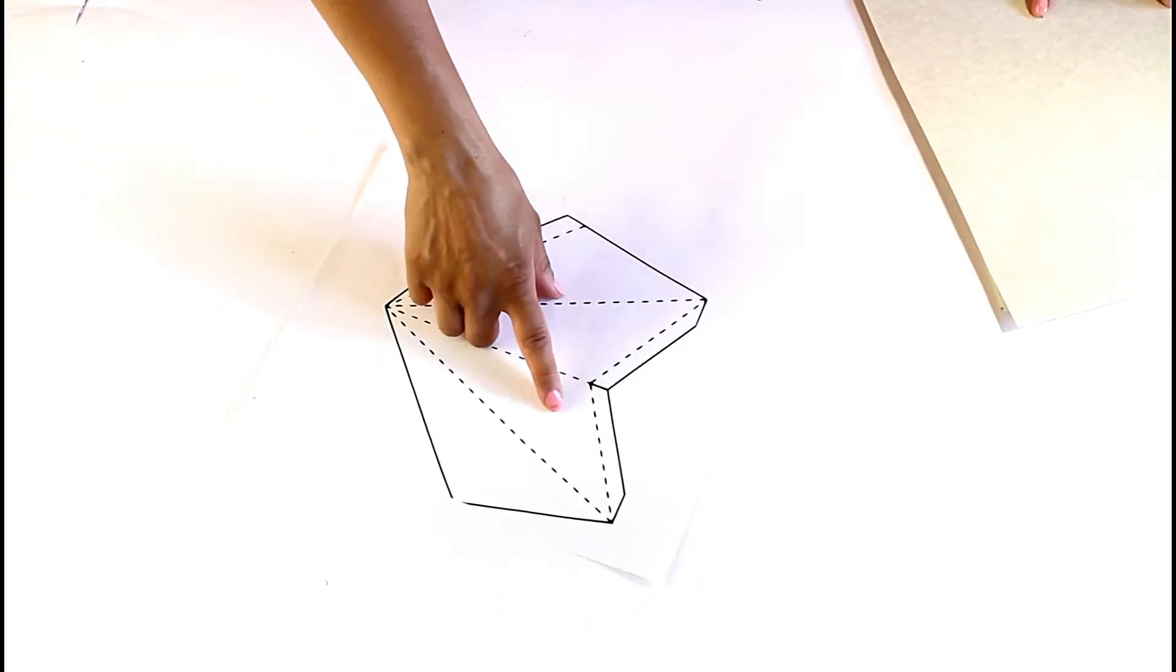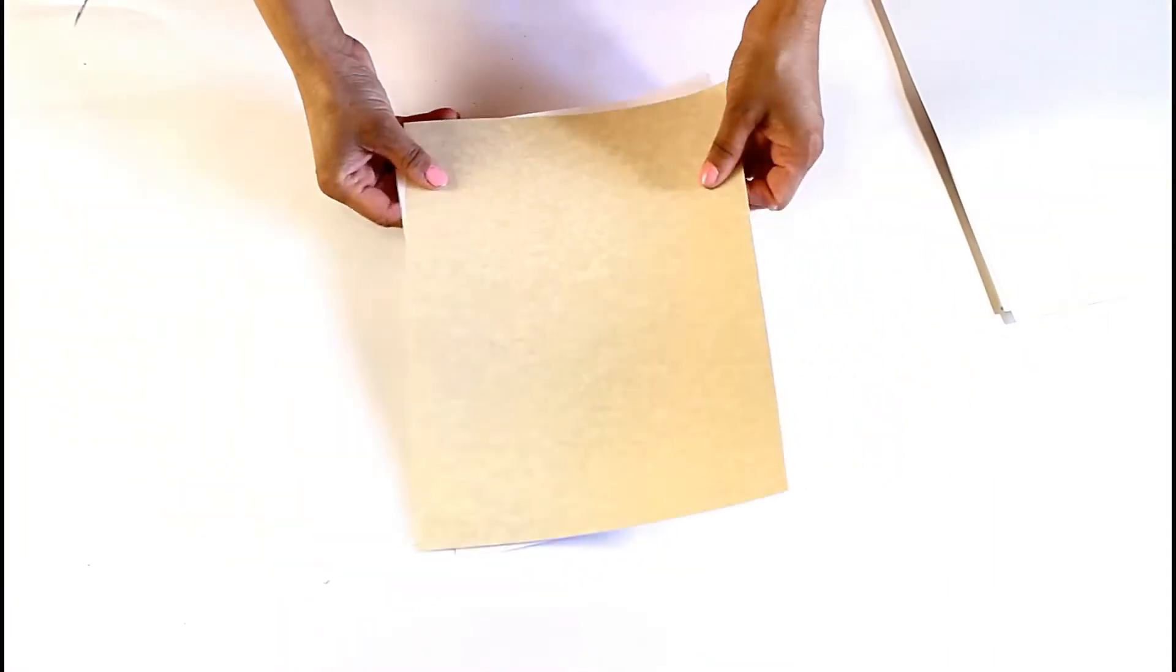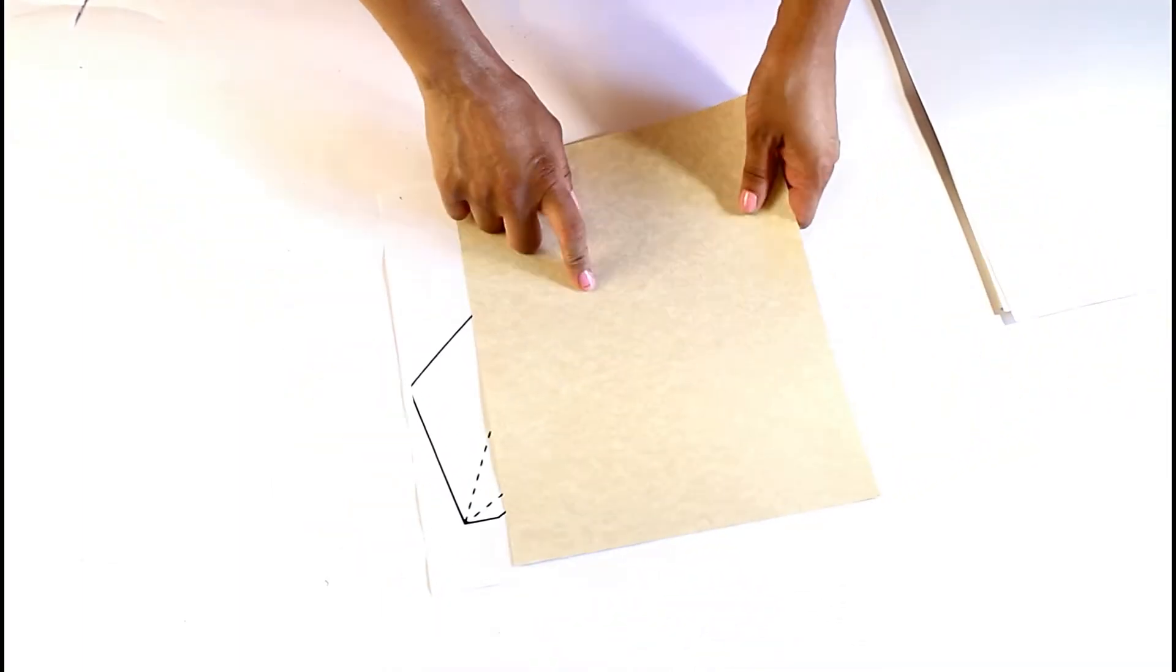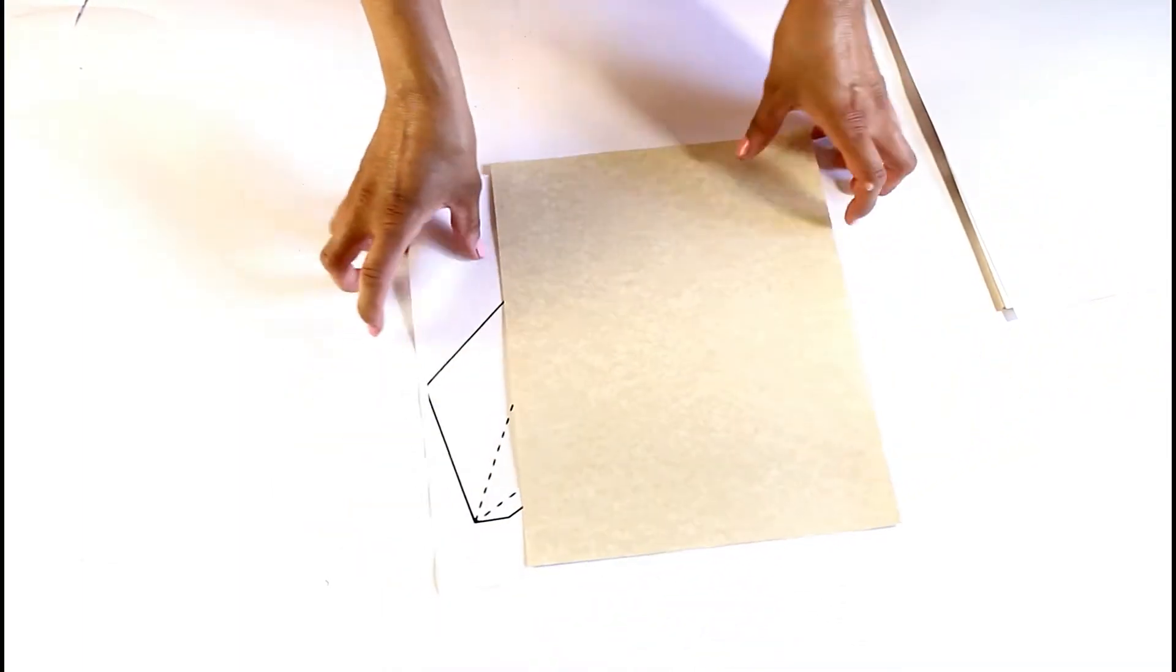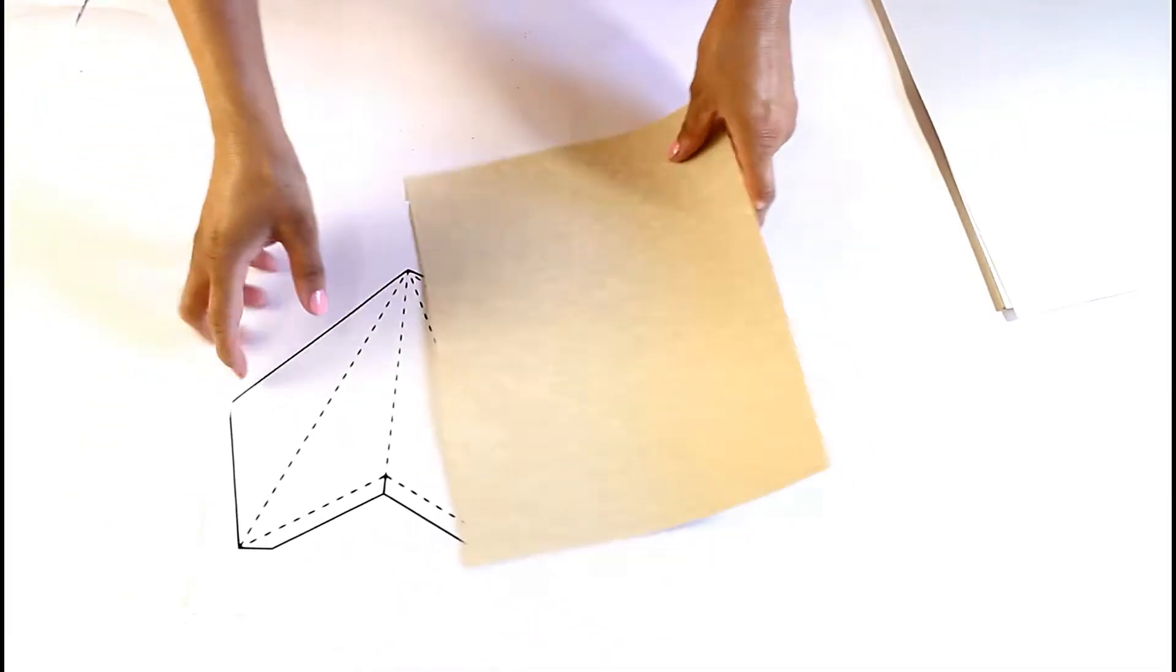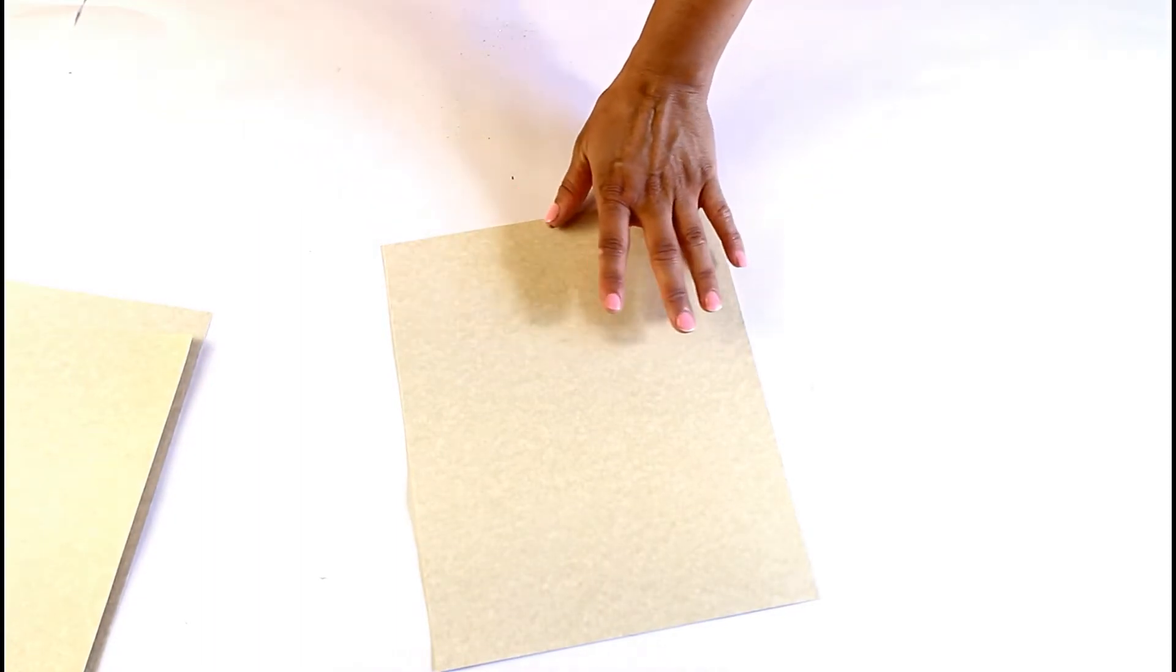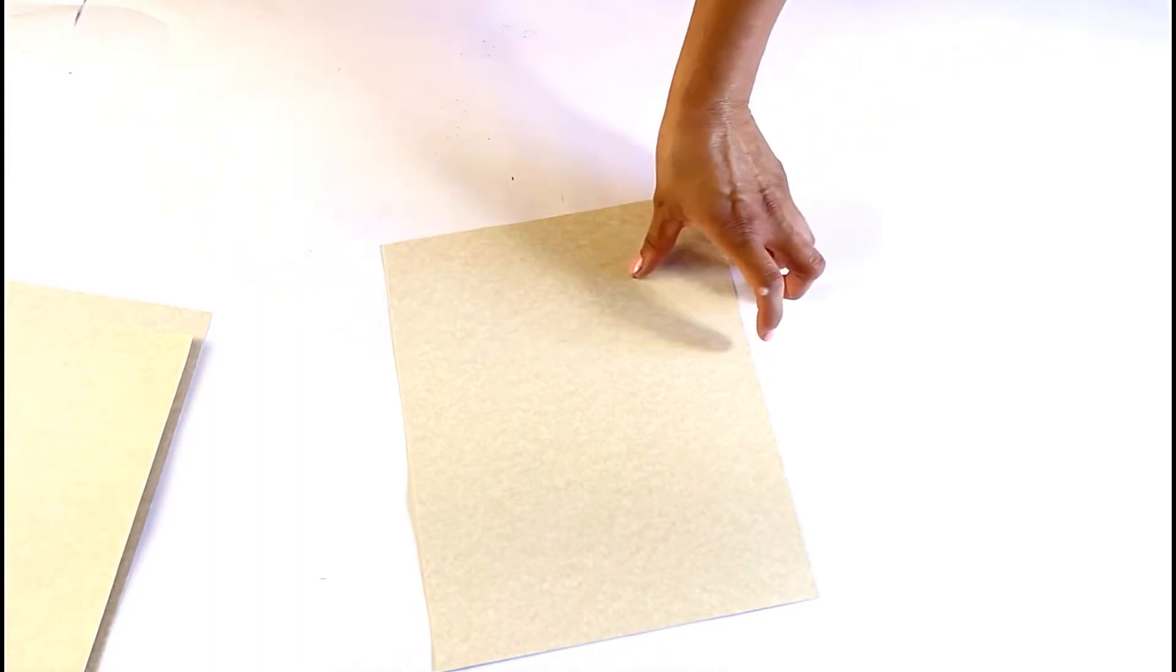You're going to use this to trace out on different sheets, five of them. I should mention that I'm using cardstock. You could use paper, but paper will be too flimsy. The best thing to use is at least 65 pound cardstock.